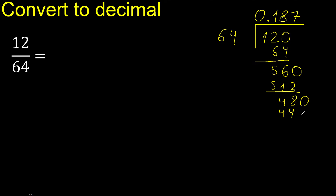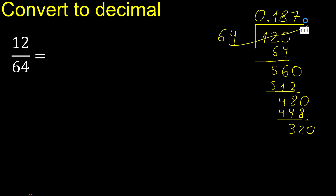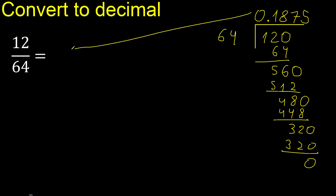Subtract. There is no number, therefore complete with 0. The number multiplied by 5 is exact. Subtract: 0, 0 — therefore finish.